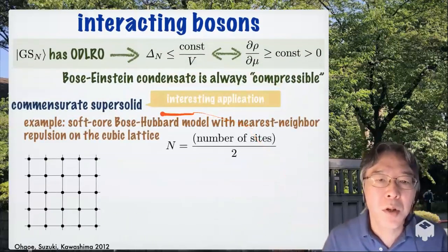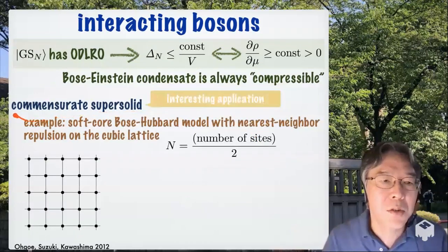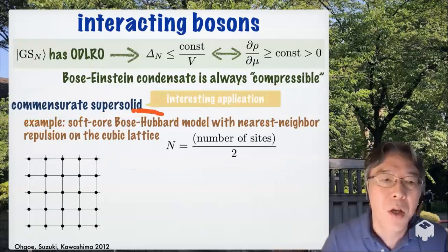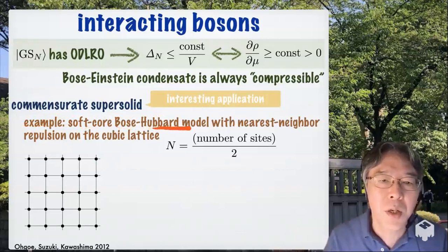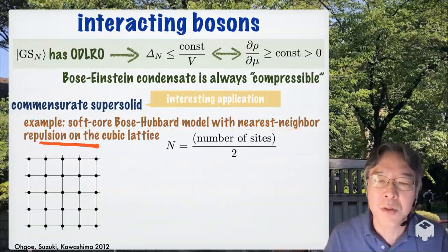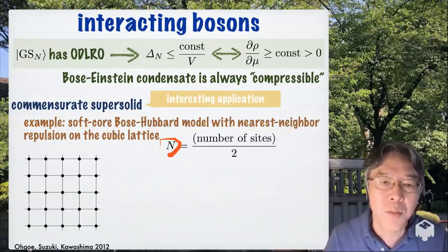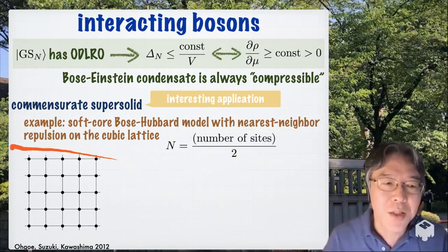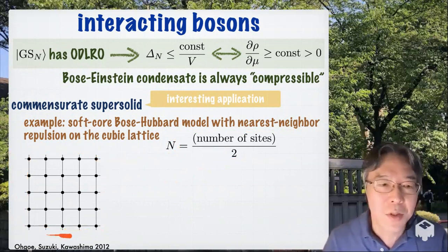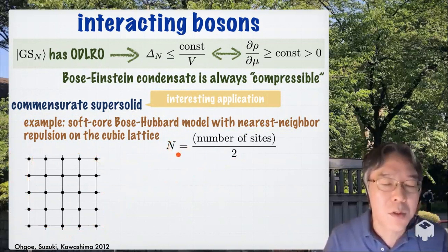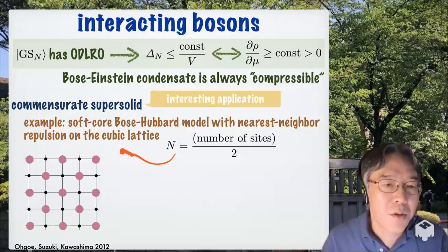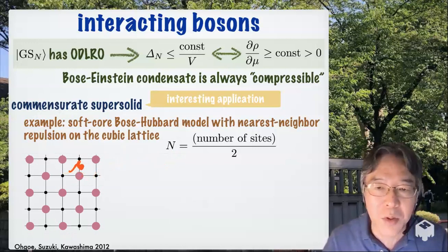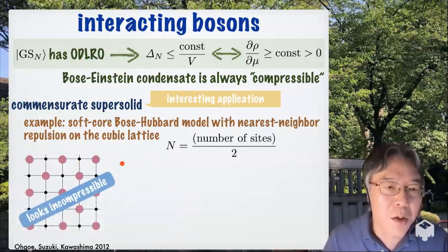As an interesting application of this observation, let's look at something called commensurate supersolid. For example, consider a soft core Bose-Hubbard model with nearest neighbor repulsive interaction on the cubic lattice and set the number of particles to be exactly the half of the number of sites. So this, imagine that this is a square lattice, but imagine that this is a part of the cubic lattice. Since the total number satisfies this, you expect that in a ground state, we have a configuration like this. You don't want anybody in your neighbor, right? And this looks very incompressible. I mean, you cannot increase the particle number, right?